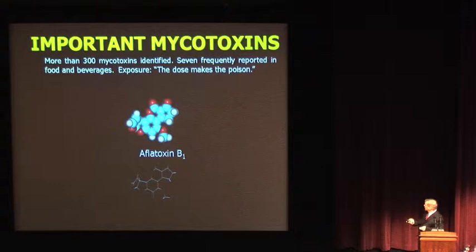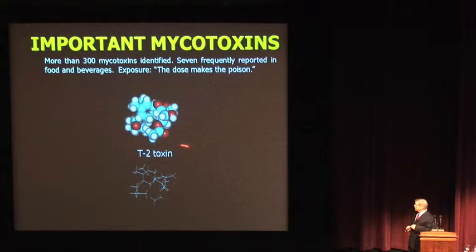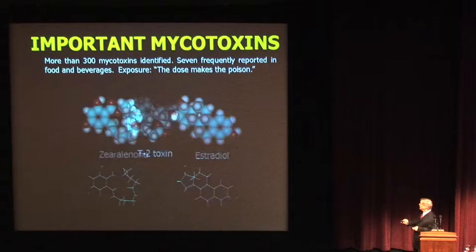This is Aflatoxin B1 — I'll get more into this later in the lecture. T2 toxin is a sesquiterpene. This is the one I mentioned that's been used as a chemical warfare agent — it was referred to as Yellow Rain. It's extremely necrotic and causes suppression of the immune system, and a lot of very potent toxicology in both animals and humans.